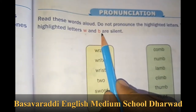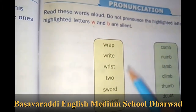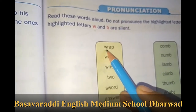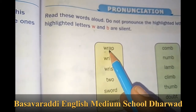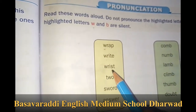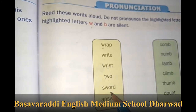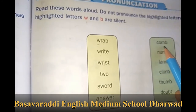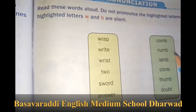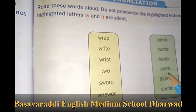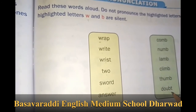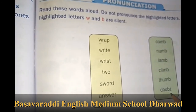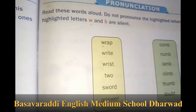Move on to the pronunciation part, children. Here you can see the W and B are silent. For silent W words: Wrap, Write, Wrist. For silent B words: Comb, Numb, Lamb, Climb, Thumb, Doubt. These are the silent W and silent B words.